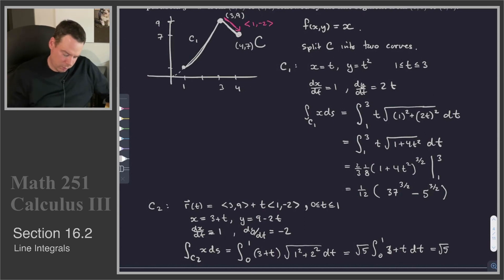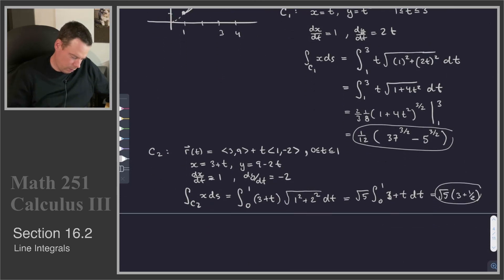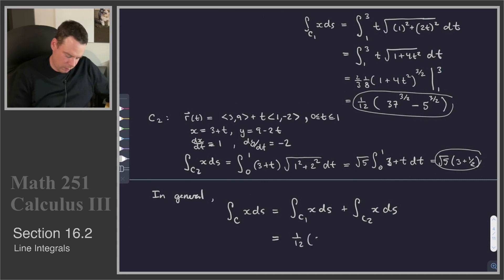And so that becomes √5, and the integral of 3 from 0 to 1, that's just 3. The integral of t from 0 to 1, that's just a half. And so there's our final answer for that integral. And in general, the integral over the whole curve is just the sum of these two integrals, which we can write down as—so in general, we have that the integral over the curve C of x ds is equal to the integral over C₁ of x ds plus the integral over C₂ of x ds. We worked out each of those individually, so that's 1/12 of 37^(3/2) minus 5^(3/2) plus √5, and then 3 plus a half is 3½, or 7/2, so that would be 7√5/2. And so there is our final answer.